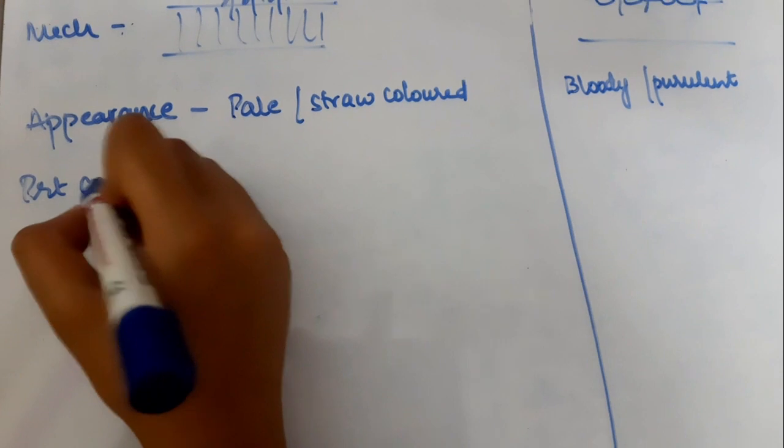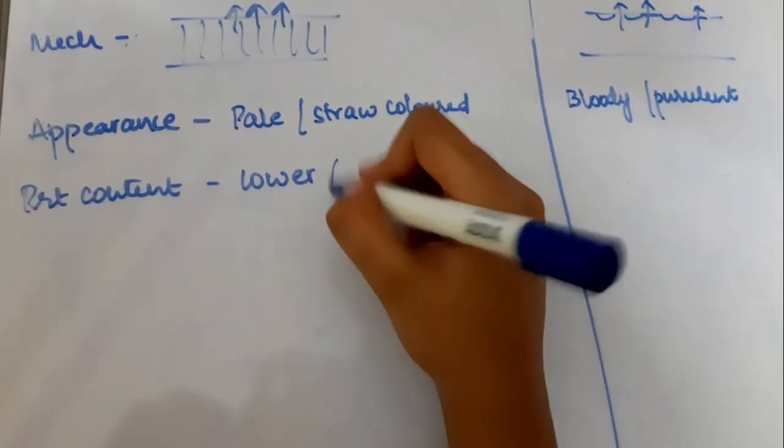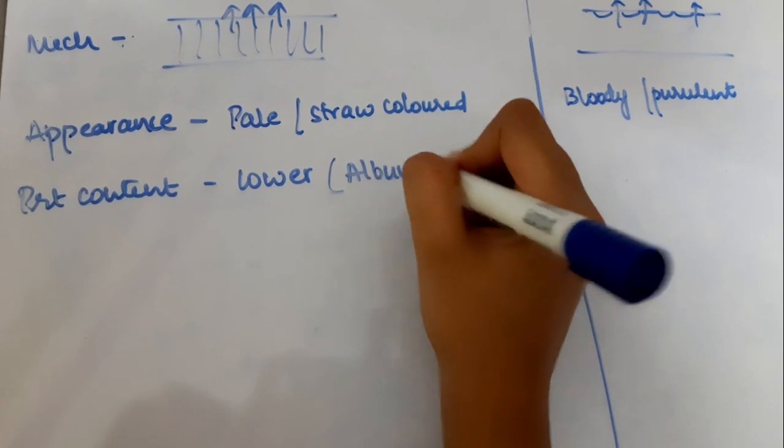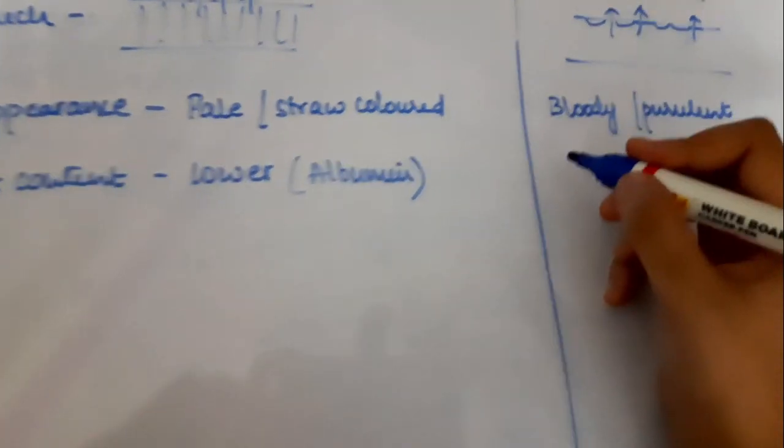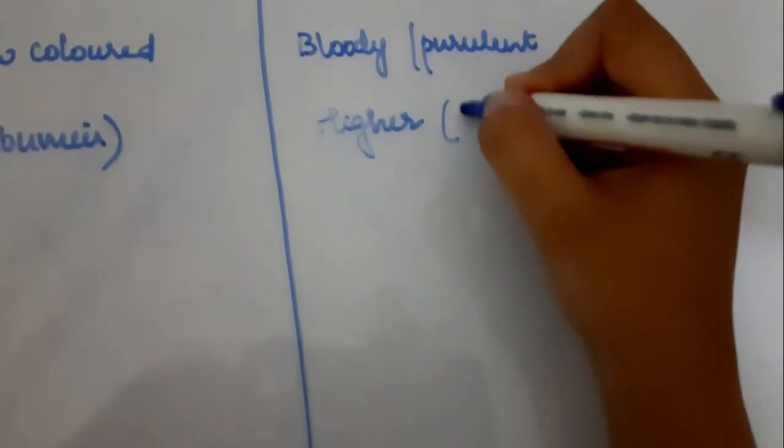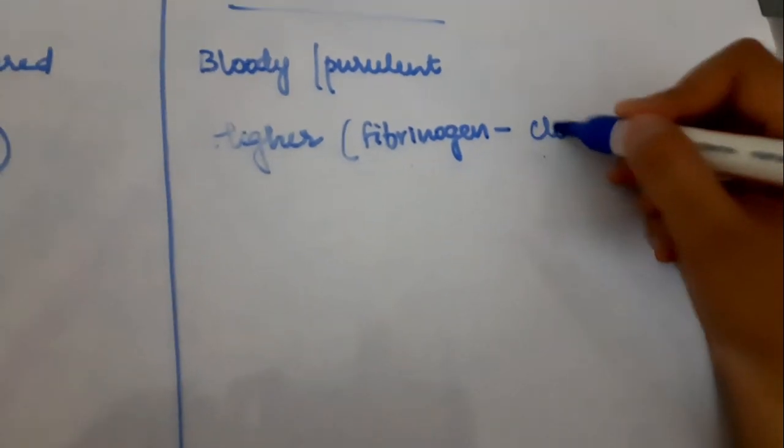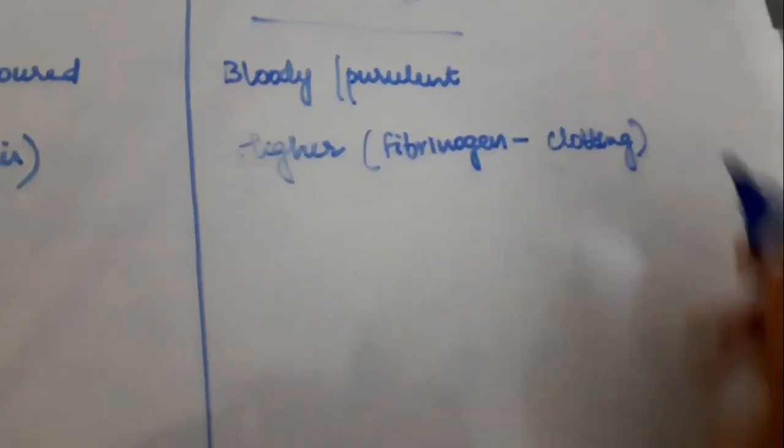Protein content is lesser in transudative fluids and the predominant protein in transudates will be albumin. Whereas in exudates, protein content is much higher and fibrinogen is the main protein. It is because of this fibrinogen that exudates clot very easily.